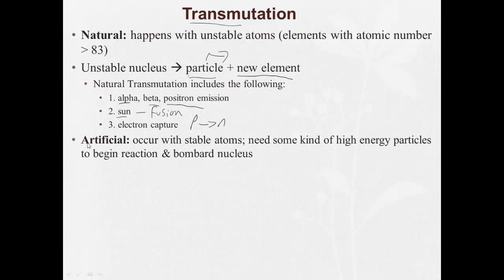The other major category of transmutation is artificial. And artificial occurs with stable atoms, but they need some type of high-energy particles to begin the reaction. So the scientists will bombard the nucleus with these high-energy particles. So you have this large nucleus. The high-energy particle will be referred to as a bullet, which gets shot at the nucleus. The nucleus absorbs that bullet, but then breaks down into a new element and a particle.